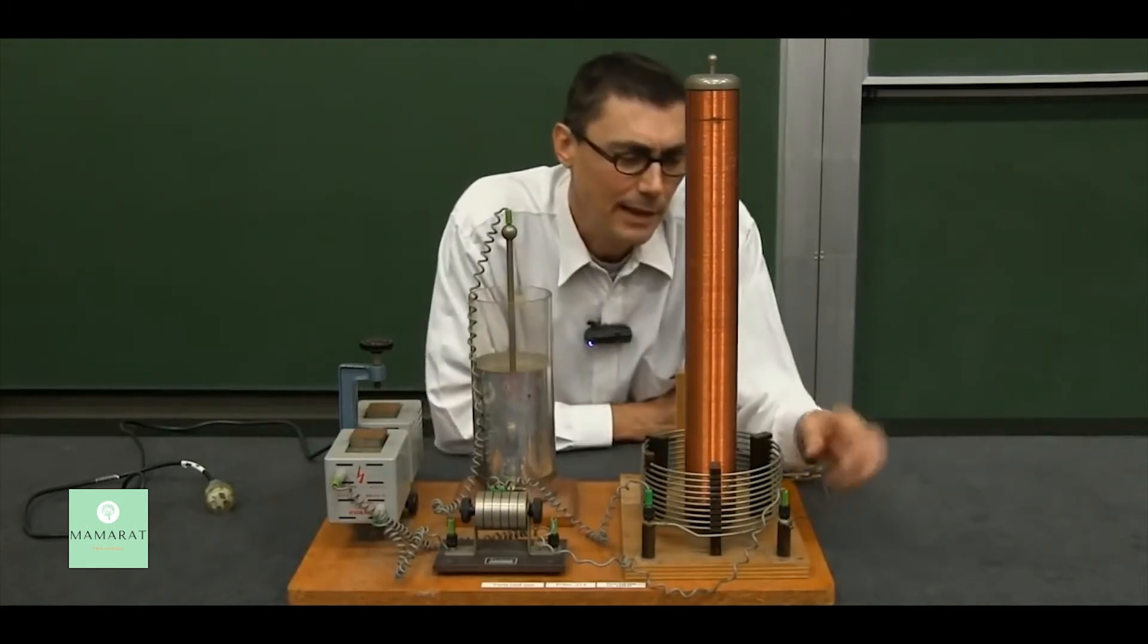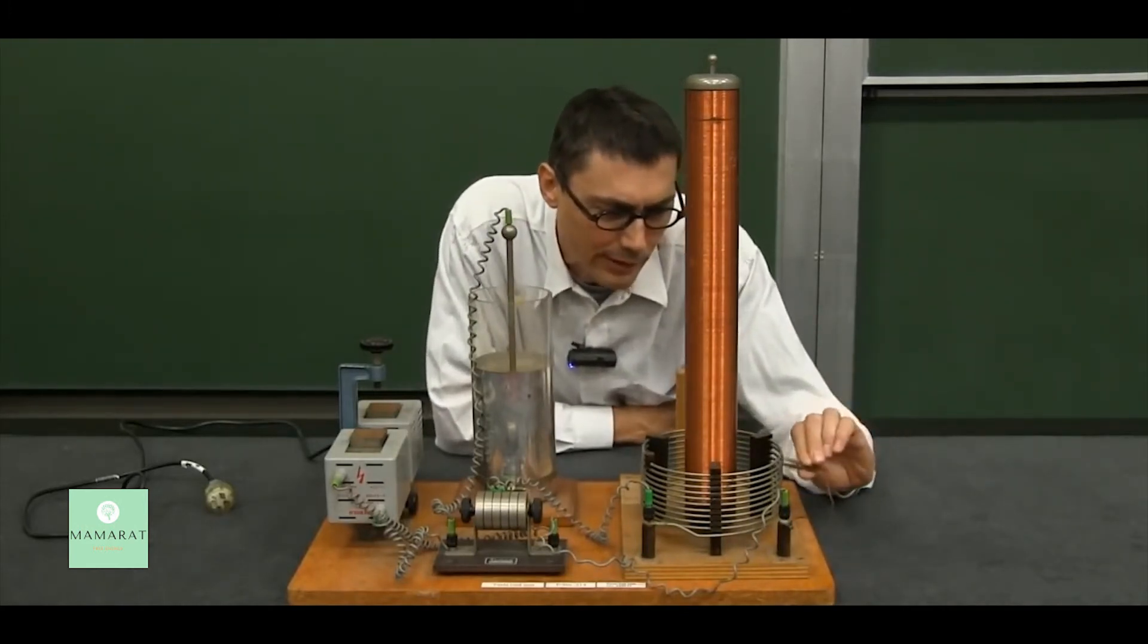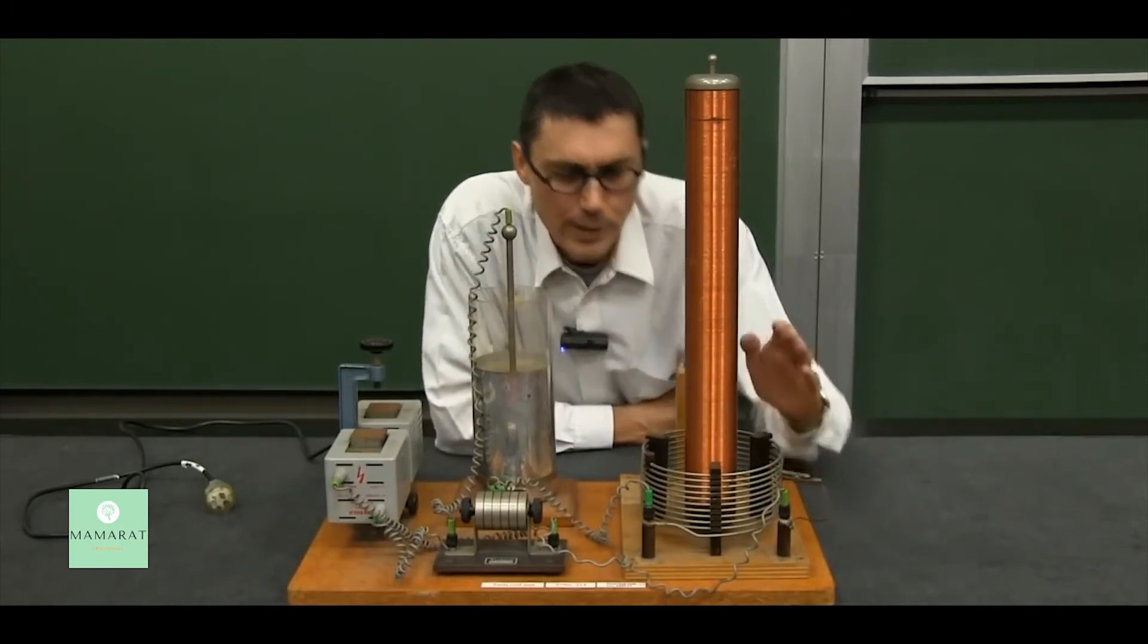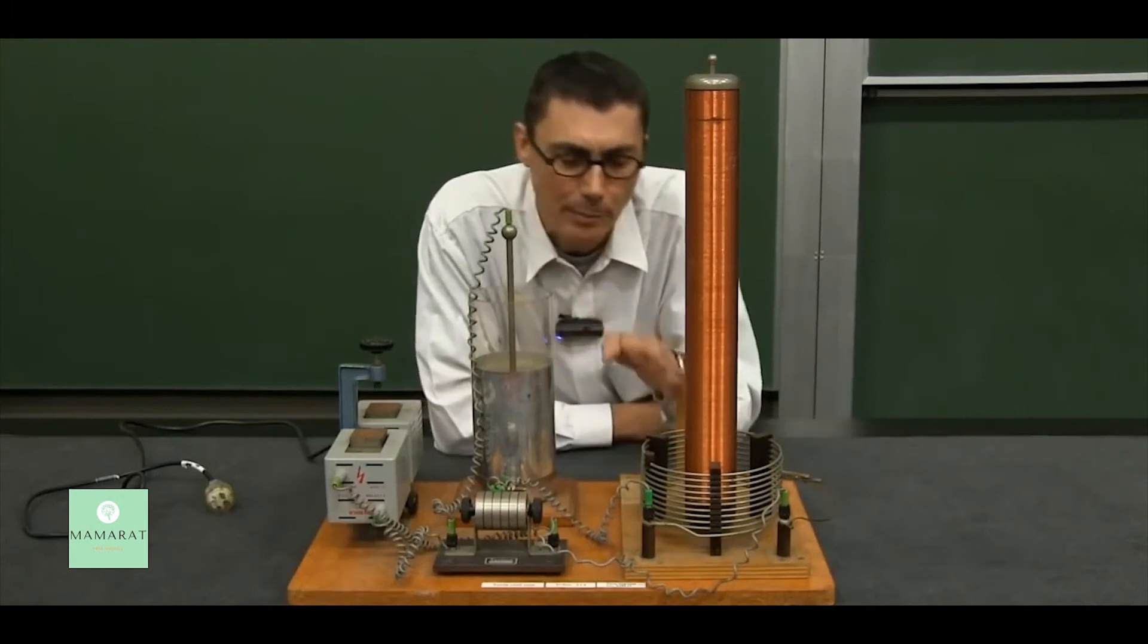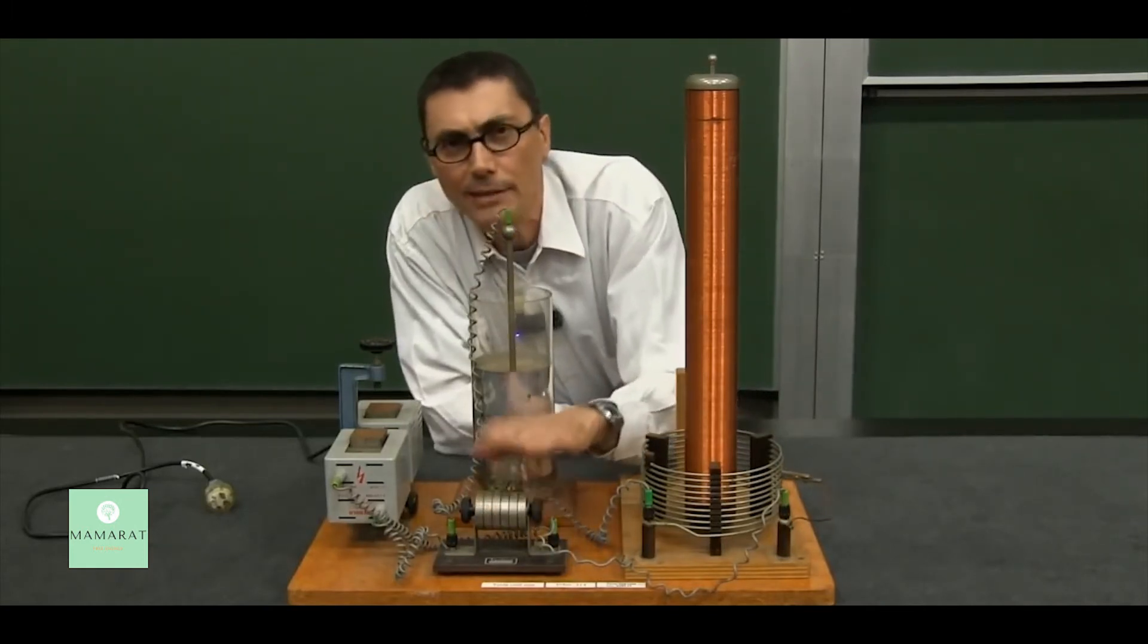And you can see on this system here I've got an alligator clip where I can tap off the coil at different points so I have a different number of turns. And so I can then tune up my tank circuit so it only picks out that frequency that's generated by the spark that we're interested in.